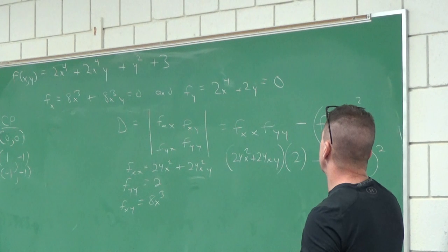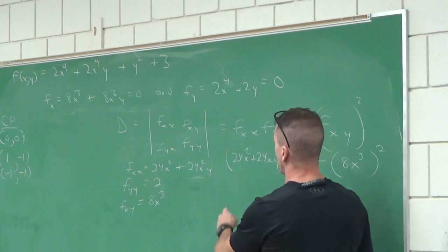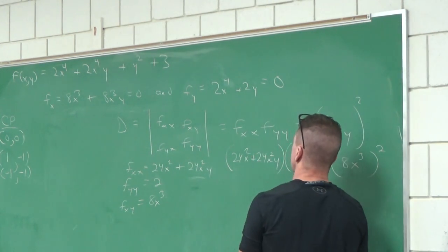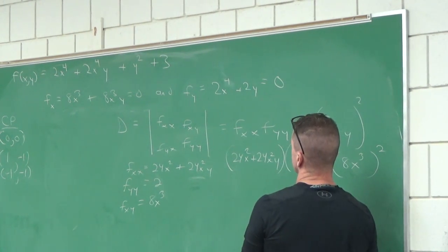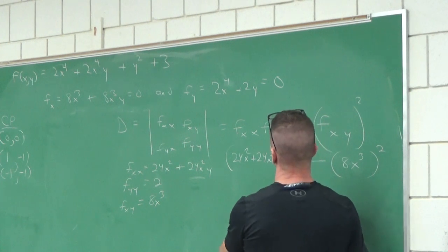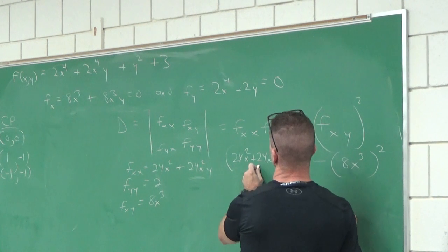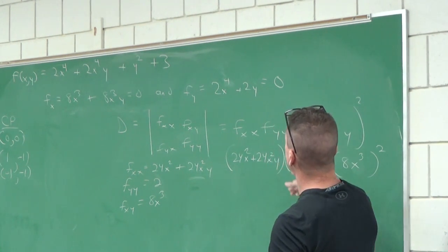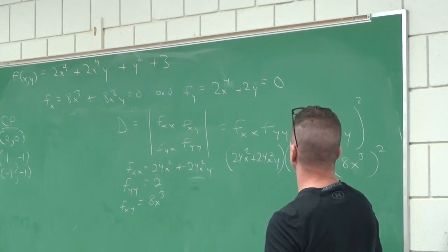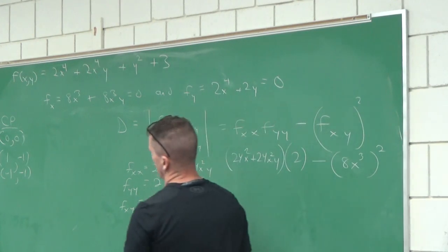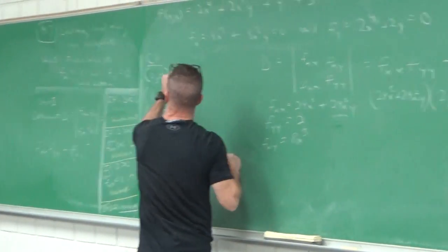What happens when I plug in (0,0)? 24(0)^2 + 24(0)^2(0) times 2 minus (8·0)^3 squared. So we get zero minus zero. Because we're getting a determinant of zero, the test is inconclusive at that point.